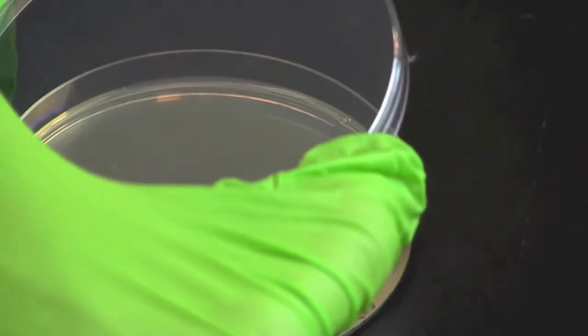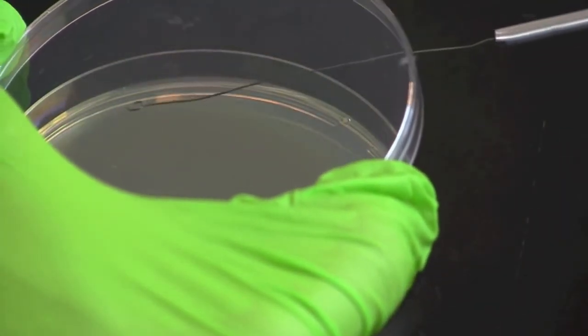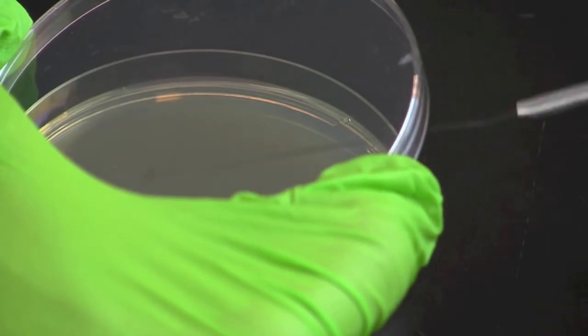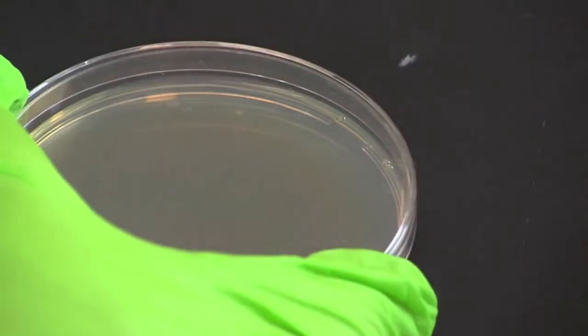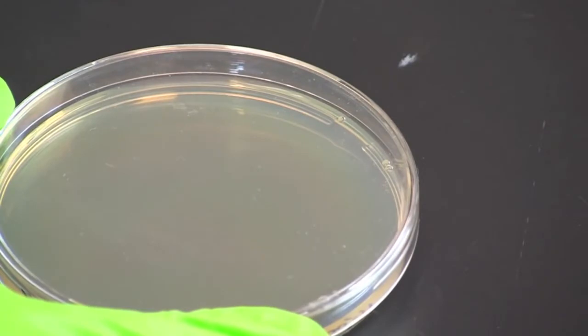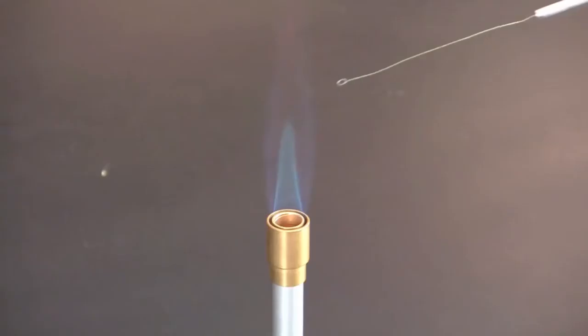Repeat the process one final time in the fourth quadrant. Flame the loop after completing the streak plating.